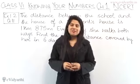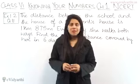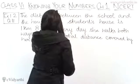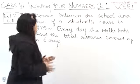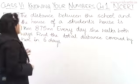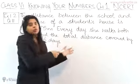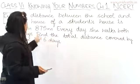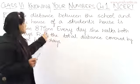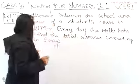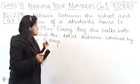Hello everyone, this is Mansi from Amitahati Church Inn. Now we are starting with question number 11, exercise 1.2. In this question, the distance between the school and the student's house is 1 km 875 m. Every day she walks both ways — find the total distance covered by her in 6 days.